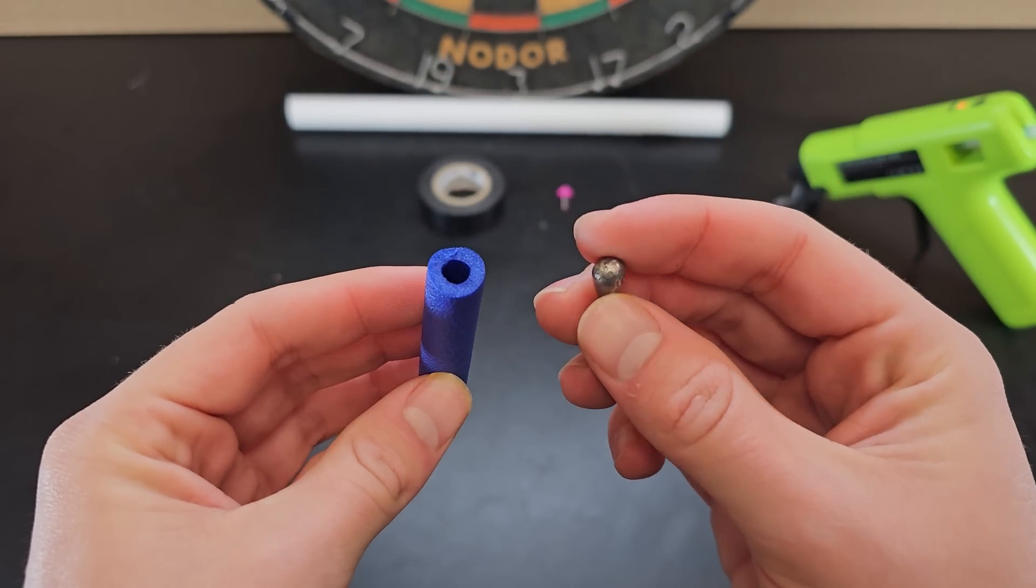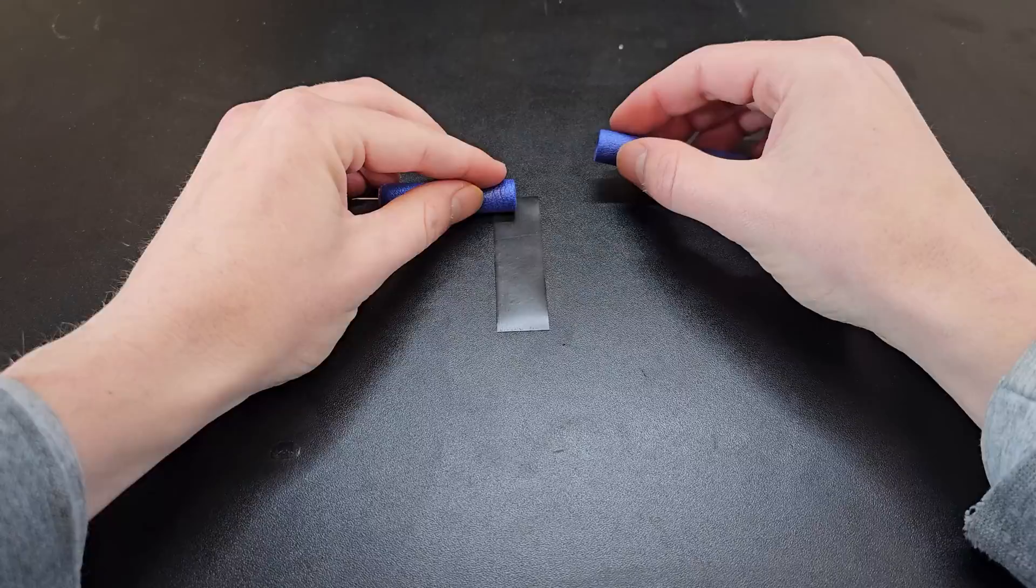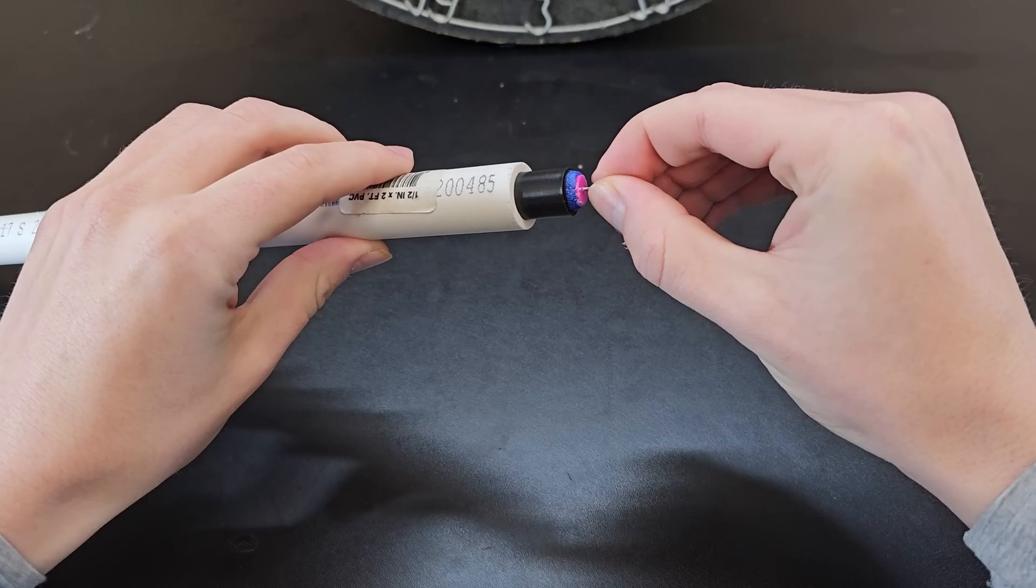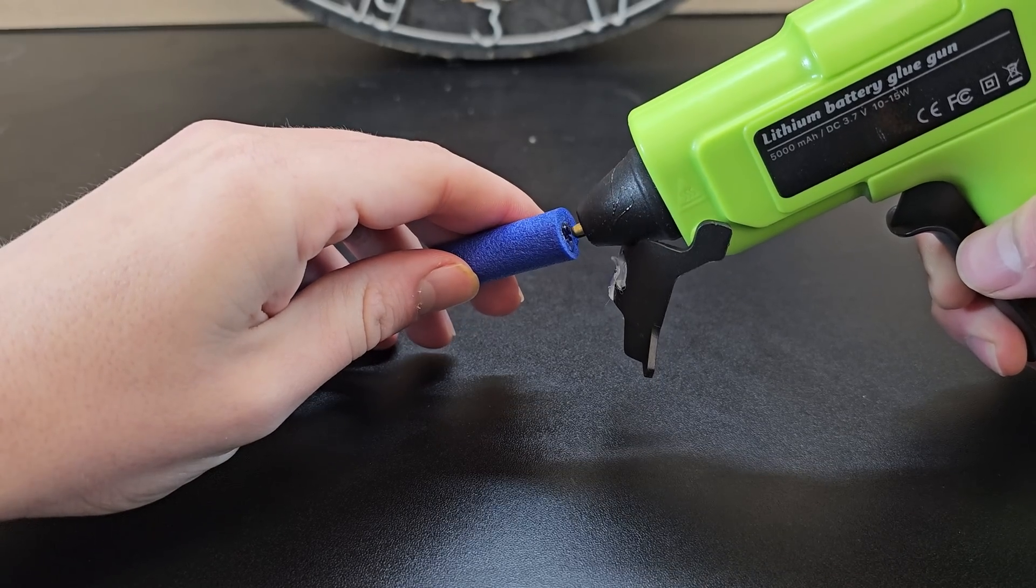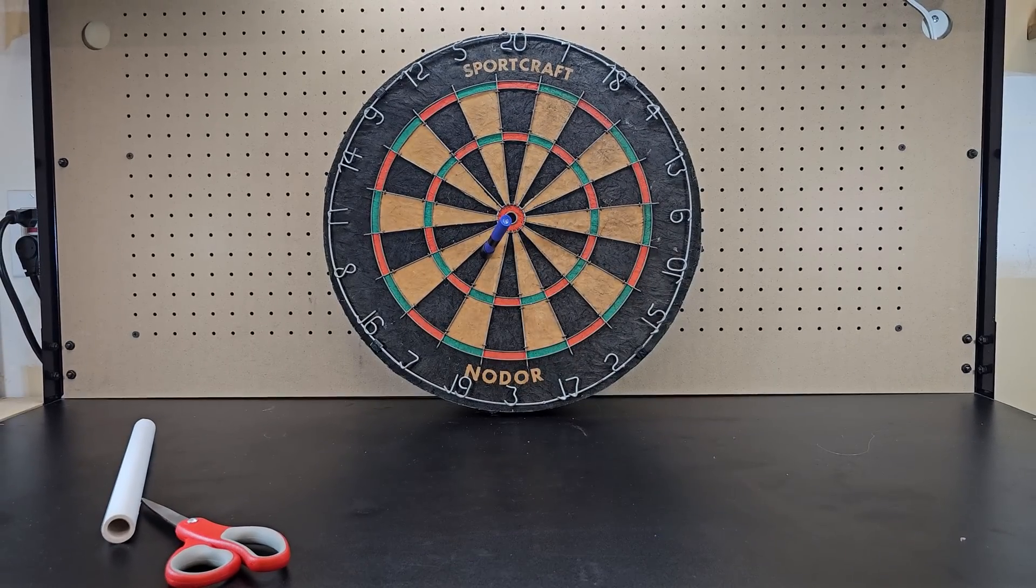So when making the dart, I added a small fishing weight towards the front and glued the tip of a tack. Then to help it fly straight, I taped an additional body to make it longer. To make a better seal with the barrel, I added some tape to the front and lastly I glued the back hole. With these modifications, I had some confidence that the dart should fly straight enough to stick to the board.